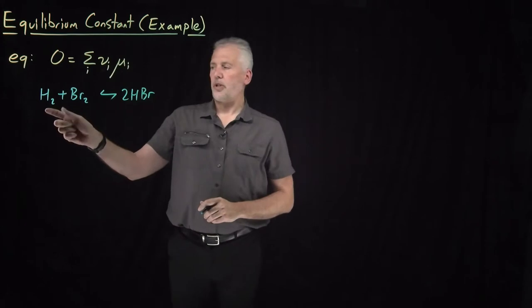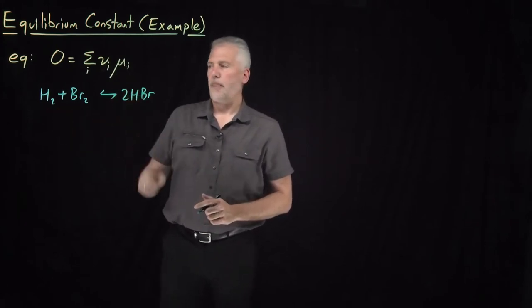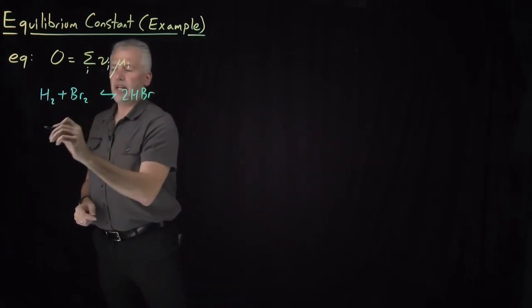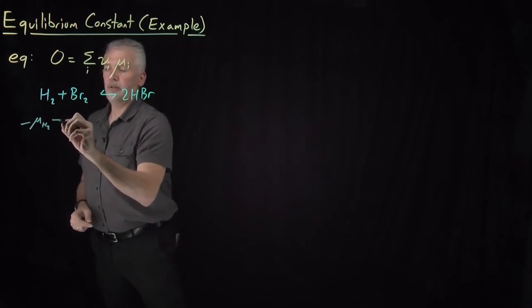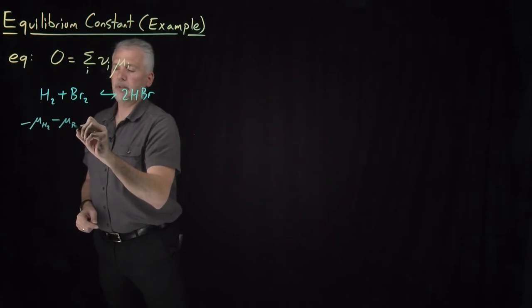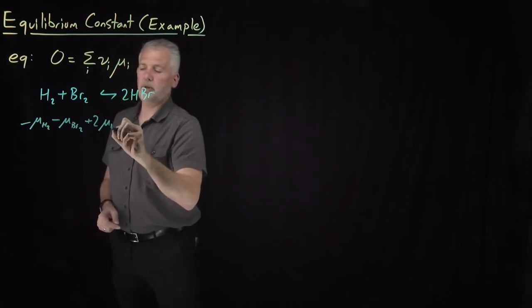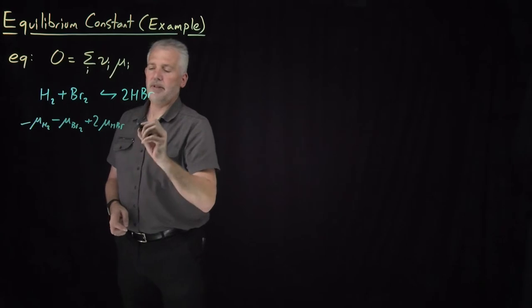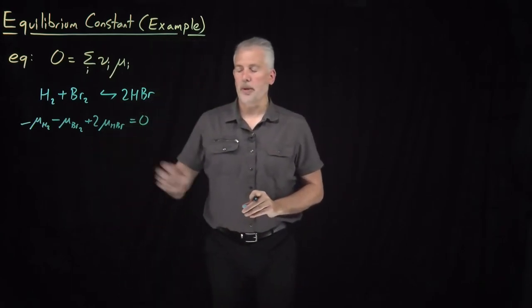This equilibrium condition tells us, using the stoichiometric coefficients from this reaction: the stoichiometric coefficient for H₂ is negative one, so we have negative chemical potential of H₂, negative chemical potential of Br₂, and positive twice the chemical potential of HBr, all adding up to zero. That's the equilibrium condition.